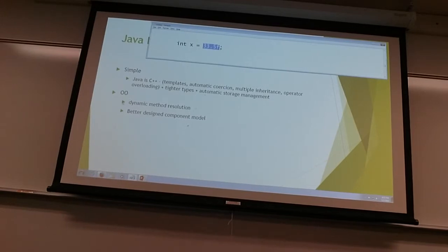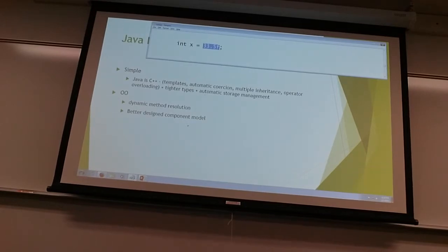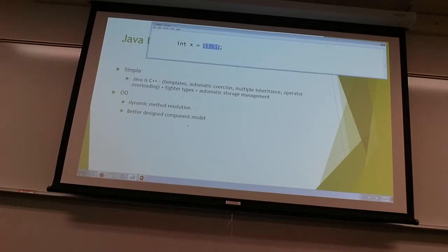Java is object-oriented. We've talked about the definition of object-oriented before, but here are a couple of nice bullet points. Dynamic method resolution: unlike other programming languages, in Java when a method is to be called, it will go and find it dynamically. In other languages, the location of the method is predefined when the program starts, but in Java it's found dynamically.